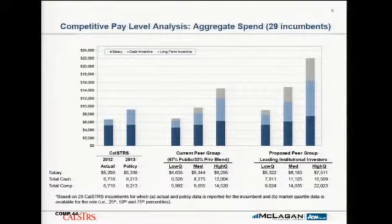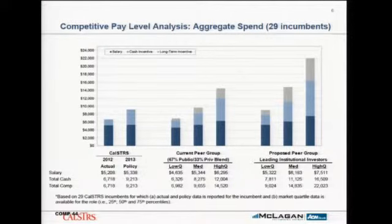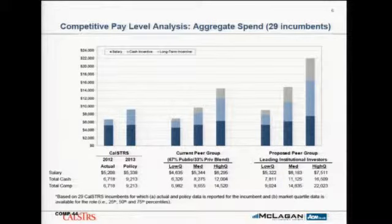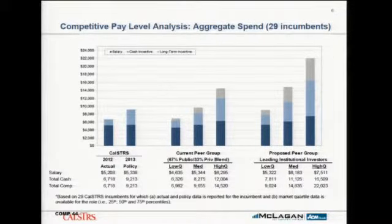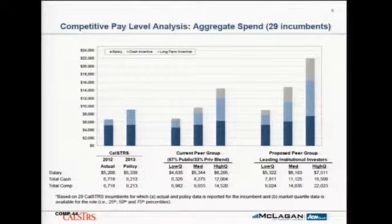The aggregate compensation for these 29 people for 2013 shows their current salaries, and then total cash showing their actual salaries plus bonuses as if paid out at maximum — what we refer to as the moon and stars number. If everything perfectly aligned, if all employees across all time periods and all elements of pay received their maximum bonuses, it would be $9.2 million in aggregate pay for this population.